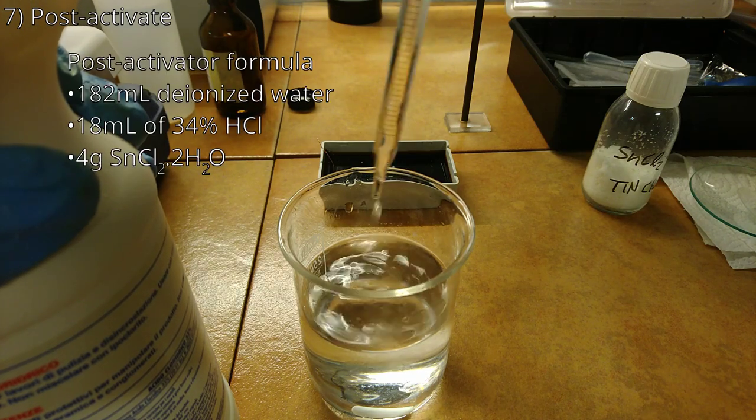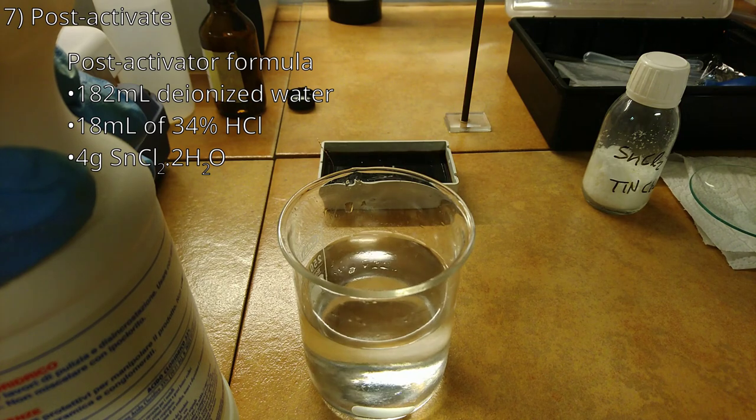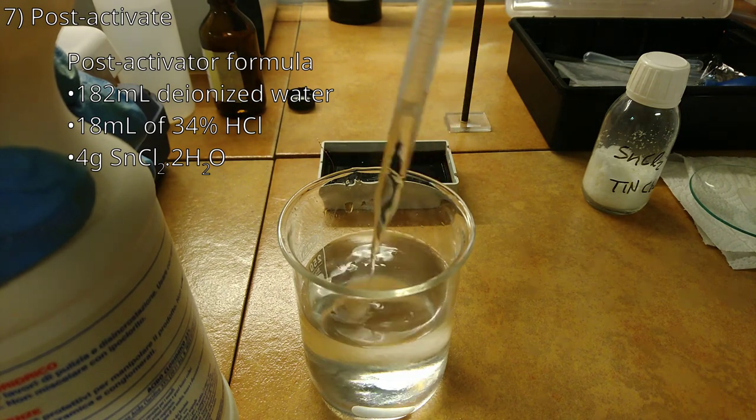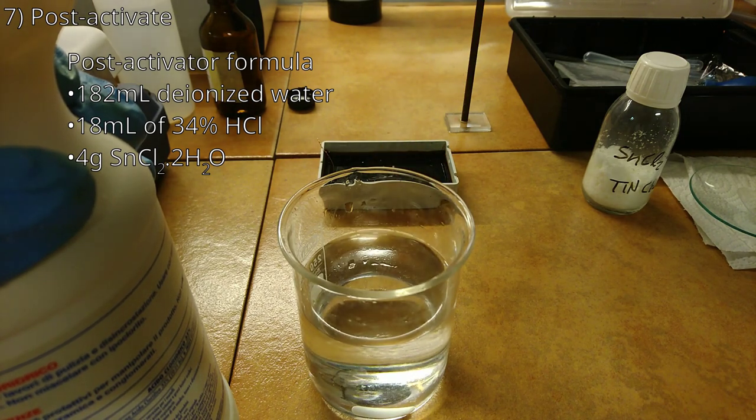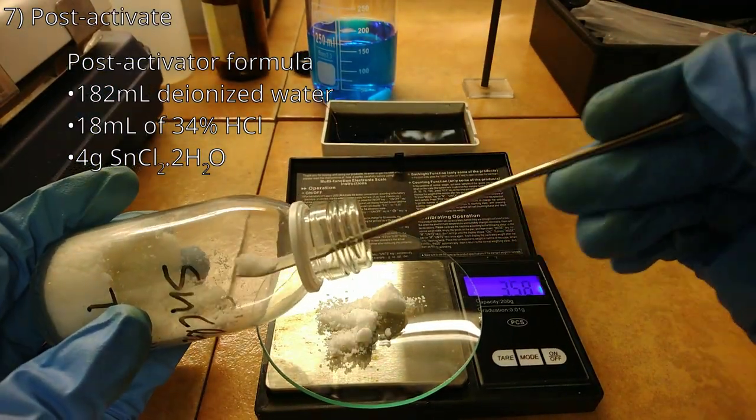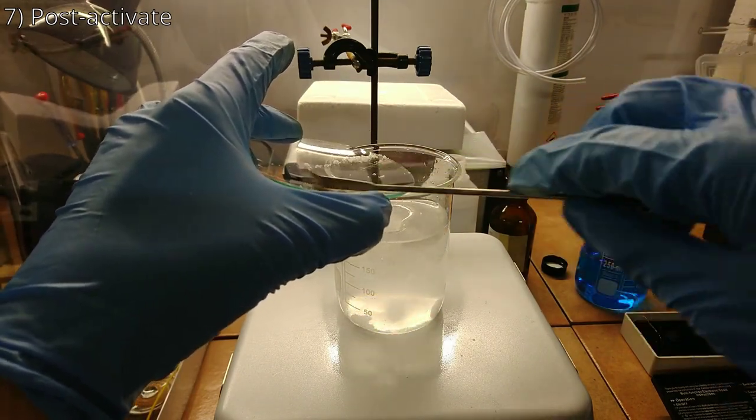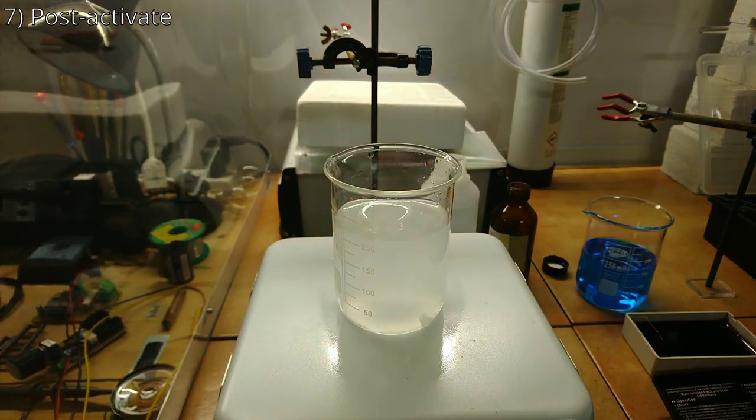Step 7 is the post-activator. It can be prepared by adding 182 ml of deionized water to a beaker. After which 18 ml of 34% hydrochloric acid is added. Followed by 4 g of stannous chloride dihydrate. I did not have much luck in reusing this solution. It appears to oxidize in a few weeks.